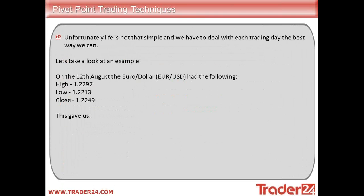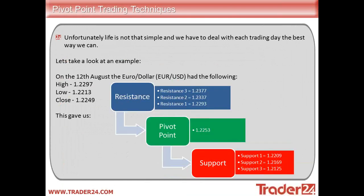Let's take a look at a trading example. On the 12th of August last year the euro-dollar had the following: a high of 1.2297, a low of 1.2213, a close of 1.2249. Using our formula to calculate the pivot point and resistance levels, that gave us a pivot point of 1.2253, three resistance levels of 1.2293, 1.2337 and 1.2377, and three support levels of 1.2209, 1.2169 and 1.2125.